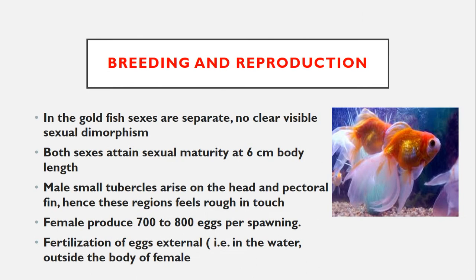The next and last point is the breeding and reproduction of goldfish. In goldfish, sexes are separate — this is an important point. There is no clear visible sexual dimorphism, but the male appears slightly smaller in body size compared to the bulky, large female during the egg-laying season. Both sexes attain sexual maturity after reaching six centimeters body length.